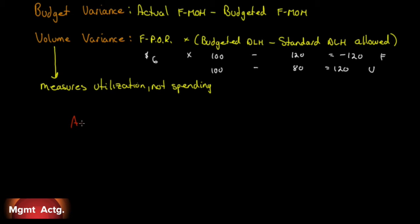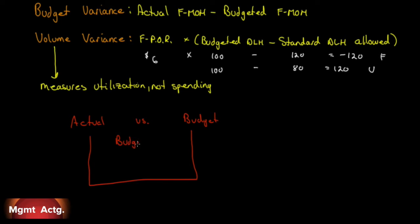The actual costs we incur versus the budget we set gives us a budget variance — it tells us how we spent our money on fixed costs, which really shouldn't change. When we compare the budget versus what we applied — and notice I'm saying applied, not standard — we apply based on the standard direct labor hours used, but this is not a standard budget. It's what we applied.